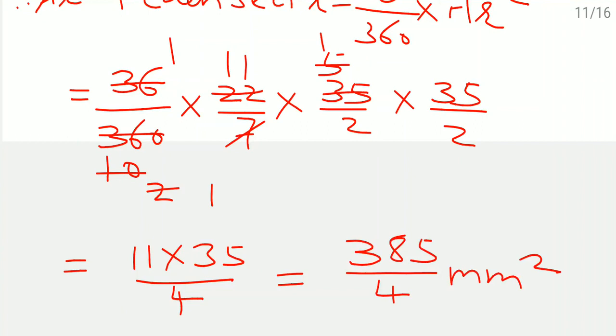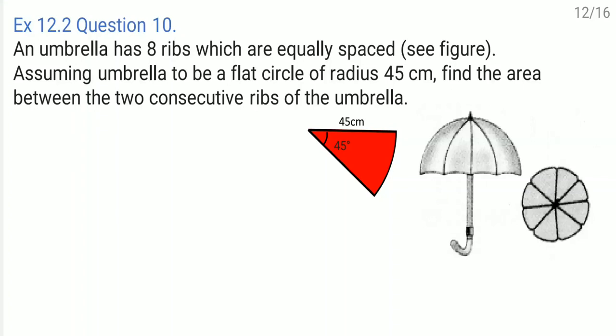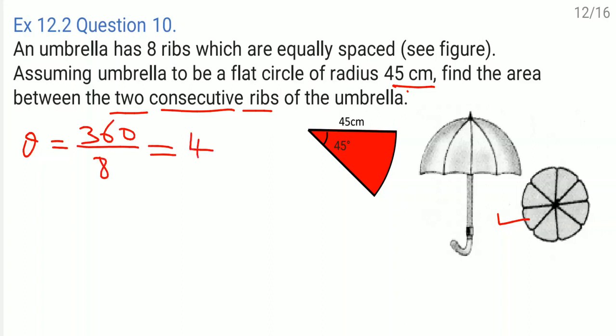Question number 10: An umbrella has 8 ribs which are equally spaced. Assuming the umbrella to be a flat circle of radius 45 centimeter, find the area between two consecutive ribs. The circle is divided into 8 equal parts, so theta equals 360 divided by 8 equals 45 degree. Radius is also 45 centimeter.